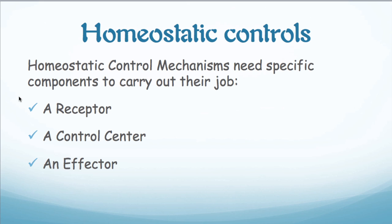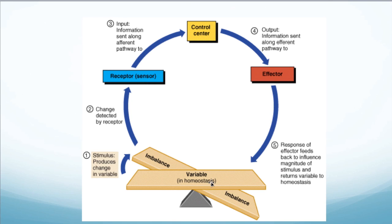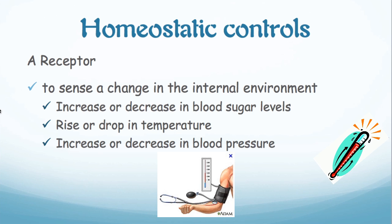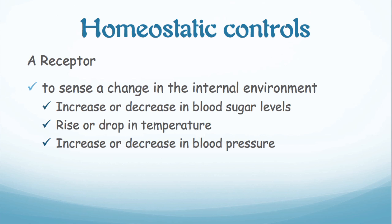A homeostatic mechanism has three components: a receptor, a control center, and an effector. These work together to maintain the balance. If we have an imbalance in something — which we call the variable — we have parts of the system that will sense it, know what to do about it, and affect that change. A receptor is there to sense the change happening in the internal environment. Examples might be an increase or decrease in blood sugar levels, a rise or drop in body temperature, or an increase or decrease in blood pressure.